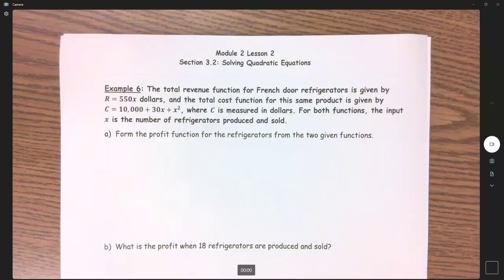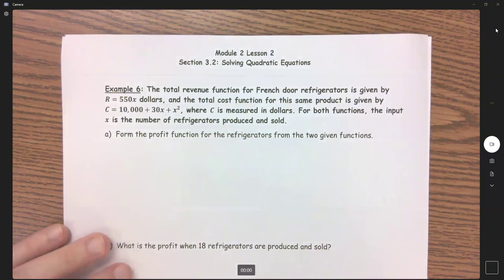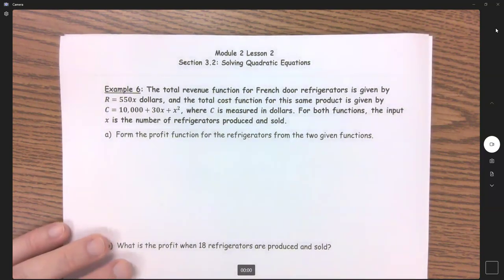All right. Last application problem. Example six: the total revenue function for French door refrigerators is given by R equals, and the total cost function for the same product is given by C equals, where C is measured in dollars. For both functions, the input X is the number of refrigerators produced and sold.